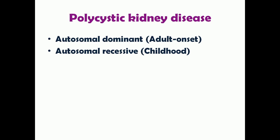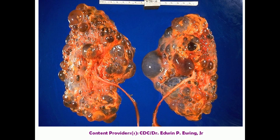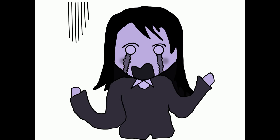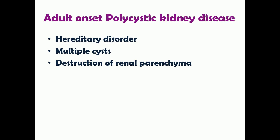This is how a classical polycystic kidney disease-affected kidney looks. This picture was taken from Wikimedia — looks gross, right? Now let's start our discussion with adult onset polycystic kidney disease.